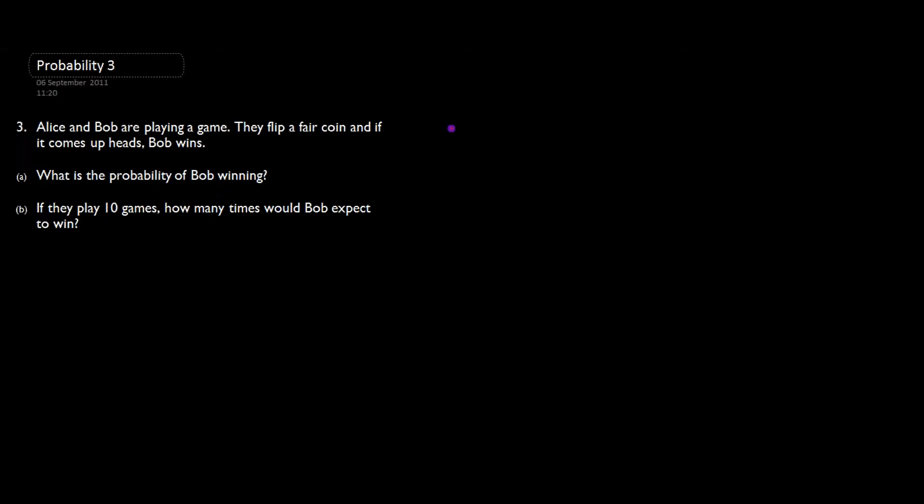Okay, our third question on probability. We have Alice and Bob playing a game - quite a simple game. They flip a fair coin and if it comes up heads, Bob wins. So what's the probability of Bob winning? Well, what are the outcomes? He could have heads or he can have tails, and if it comes up heads, Bob wins. So the probability that Bob wins - there's one possible outcome where he wins out of two possible outcomes, so it's a half.